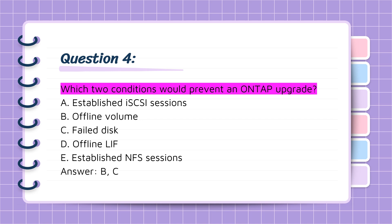Question 4: For which two conditions would prevent an ONTAP upgrade? A. Established iSCSI sessions. B. Offline volume. C. Failed disk. D. Offline leaf. E. Established NFS sessions. Answer: B, C.